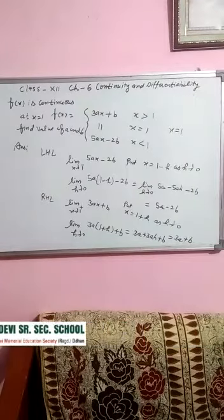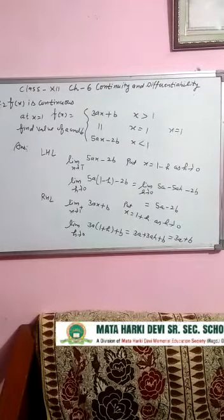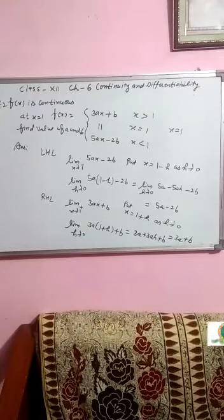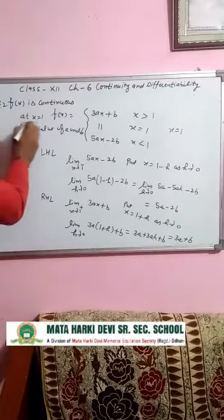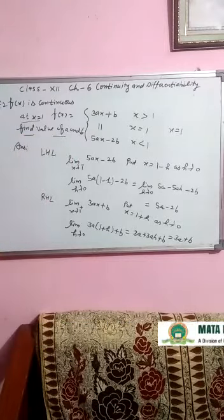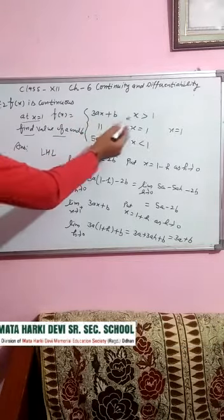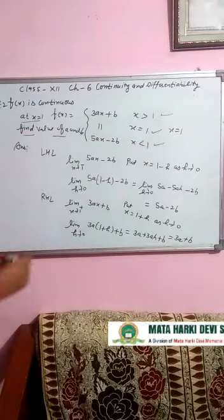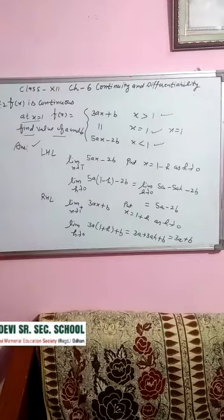So now question number 2. Aaj ka question number 2 mein kya hai? f(x) aapko continuous given hai at x equal to 1. Aapne find karna hai: find value of a and b. Function kya given hai? 3ax plus b for x greater than 1, 11 at x equal to 1, and 5ax minus 2b for x less than 1.